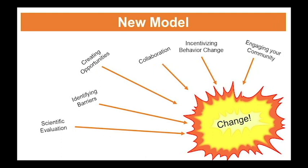Real effective change actually requires a lot of different things to happen. Rather than just boring lectures or making students write reports, we need to do scientific evaluations, but also identify barriers to why change isn't happening, figure out how to create opportunities for students and others to make good decisions contributing to sustainability, and teach students the value of collaborating with one another and with people in their community. That will incentivize more behavior change at a larger scale and hopefully engage with the community as well.